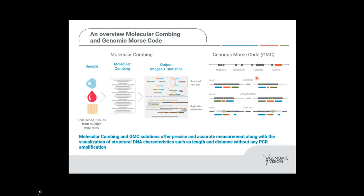As an example, if we have a deletion event shown here in gene one, we have a genomic Morse code in blue, red, and green. The target deletion event shown in yellow causes our blue and green to remain constant but the red becomes shorter. In an amplification event, our motif is green, red, and blue — the amplification causes our green and blue to remain constant but the red elongates. In a similar situation with inversion in gene three, we swap around the red and the green. Essentially, genomic Morse code is a recognition of different motifs based on probe size, color, and distance in between.